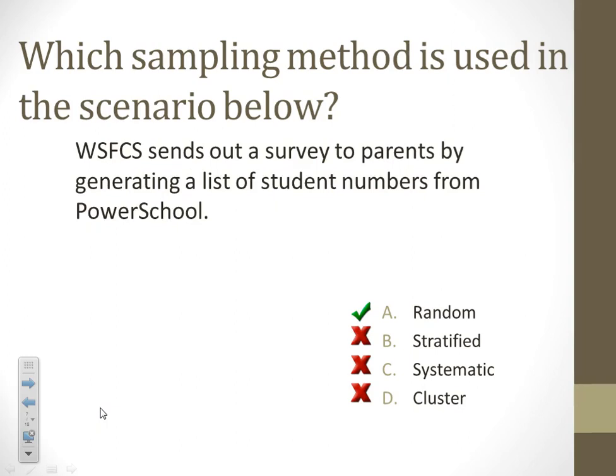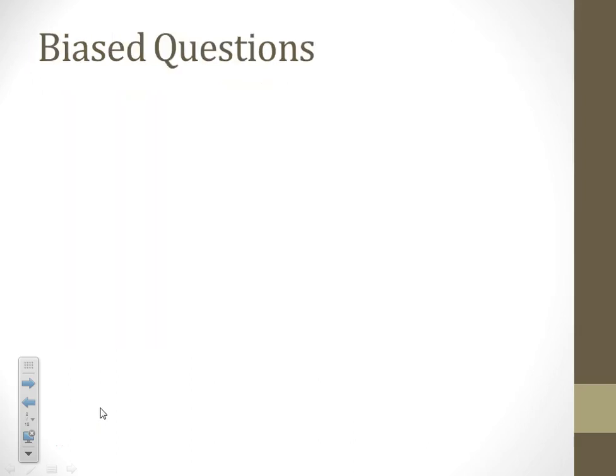Here is a random one: a school of 7,500 sends out a survey of parents by generating a list of random numbers in PowerSchool. Everybody has an equal chance of being chosen here. All right, so before we go on...